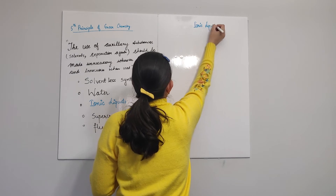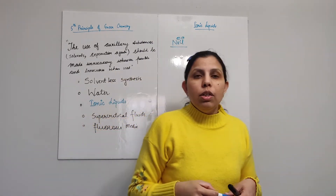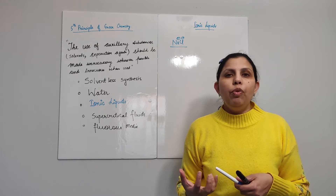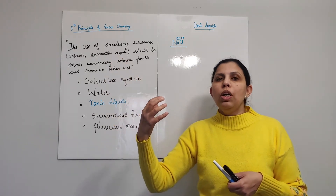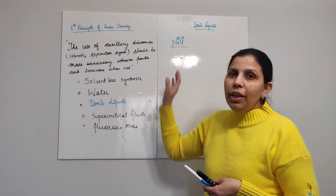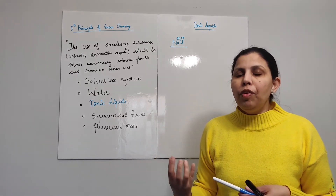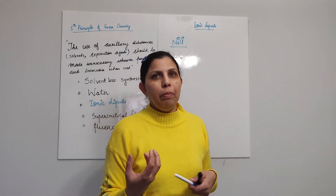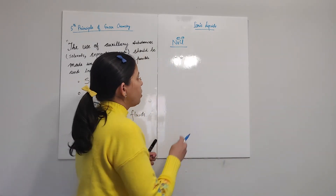To explain ionic liquids, I will take the example of sodium chloride — the common table salt. Sodium chloride is solid at room temperature; its melting point is 801°C, so it requires very high temperature to melt. However, sodium chloride is not volatile — it does not sublime, and even if melted it will not vaporize. So if sodium chloride were liquid at room temperature, it would serve as a non-volatile solvent. This motivated people to look for alternatives — and they found ionic liquids.